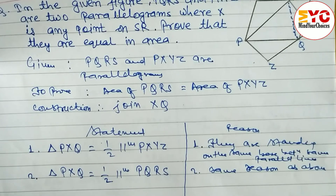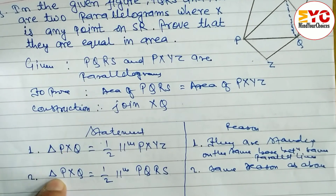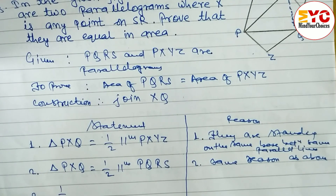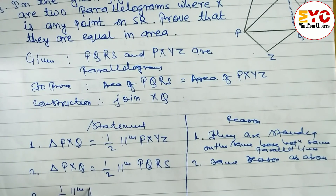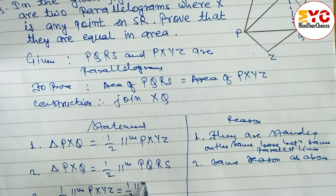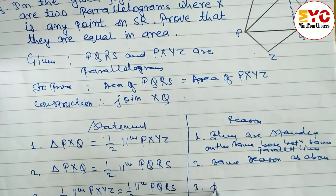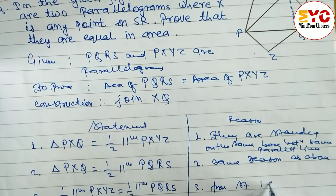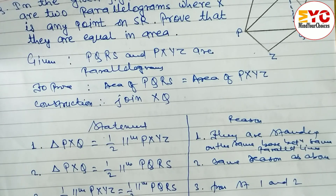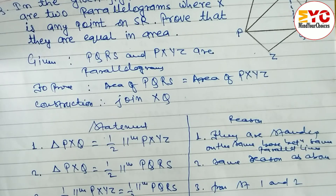In statement 3, since the LHS of both statements — triangle PXQ — are equal, the RHS must also be equal. So we can write: one-half of parallelogram PXYZ is equal to one-half of parallelogram PQRS. This follows from statements 1 and 2. Cancelling the one-half on both sides gives: parallelogram PQRS equals parallelogram PXYZ.